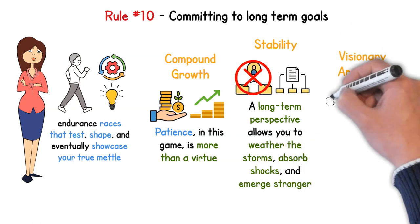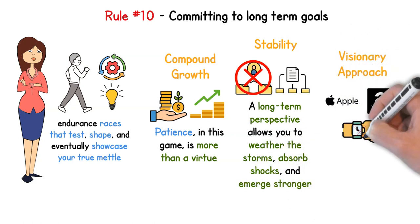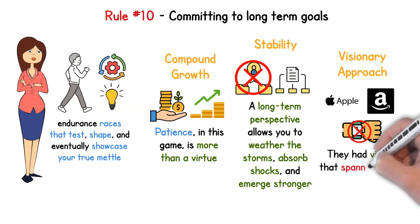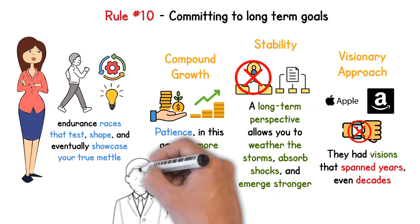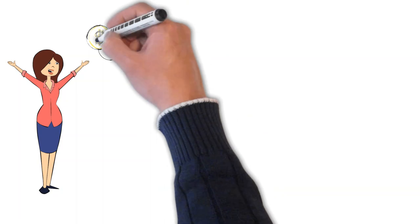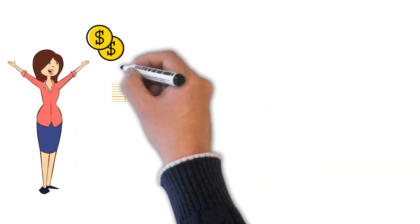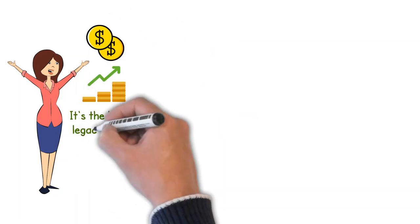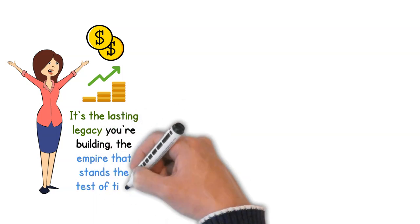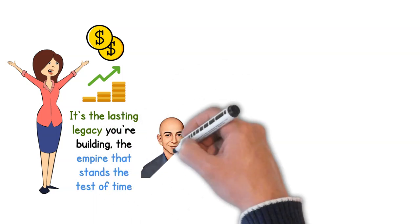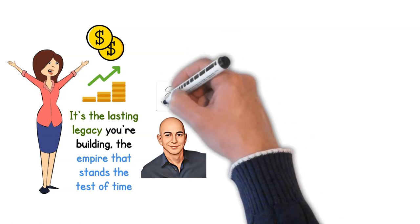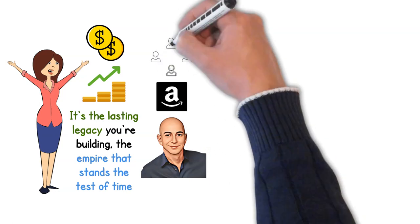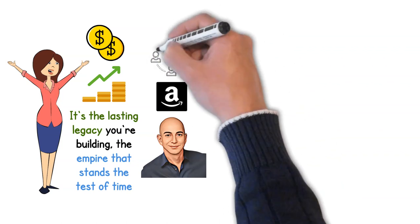Visionary approach: companies like Apple or Amazon weren't built overnight. They had visions that spanned years, even decades. Embrace that mindset. Where do you want to be in 10, 20, or even 30 years? Short-term wins, they're sweet. But long-term, it's the lasting legacy you're building, the empire that stands the test of time. Jeff Bezos, in his early Amazon days, always talked about his vision for a longer horizon. He knew that every decision he made wasn't just about immediate returns but shaping the future.